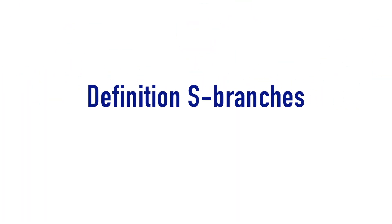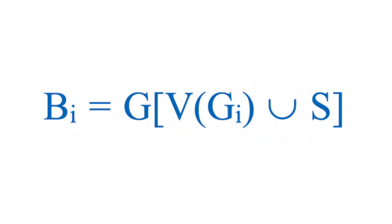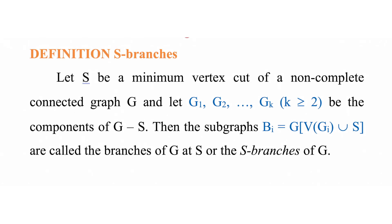Let us see the definition of S-branches. Let S be a minimum vertex cut of a non-complete connected graph G and let G1, G2, ..., Gk (k ≥ 2) be the components of G minus S. Then the subgraphs Bi = G[V(Gi) ∪ S] are called the branches of G at S, or the S-branches of G.